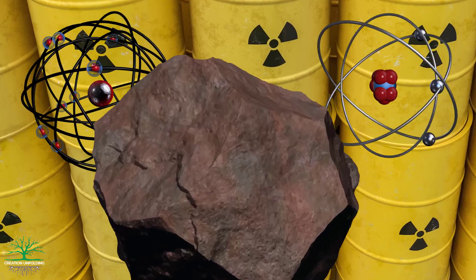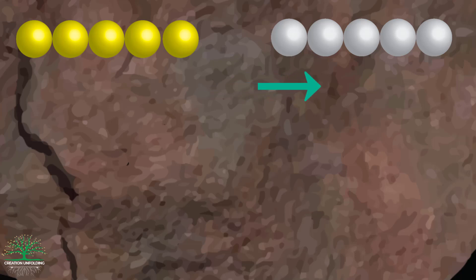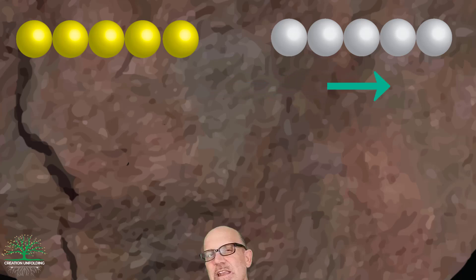If we picked this rock up today and looked inside, we might find five atoms of uranium-238 and five atoms of lead-206. That means five of the original uranium atoms decomposed or decayed away into lead.